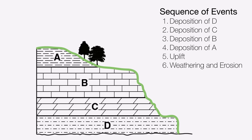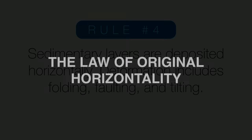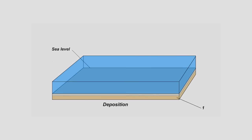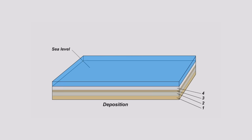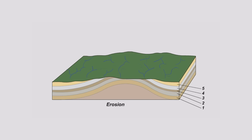Let's add some more rules and get a little more complex. Rule number four: sedimentary layers are generally deposited horizontally or flat, and they're only going to be disturbed if some sort of deformation has taken place — things like folding, faulting, or tilting. This idea that layers form originally in a horizontal manner is called the law of original horizontality. Notice in the animation how layers form flat and horizontal — it's not until deformation such as folding takes place that the layers lose their horizontal nature.